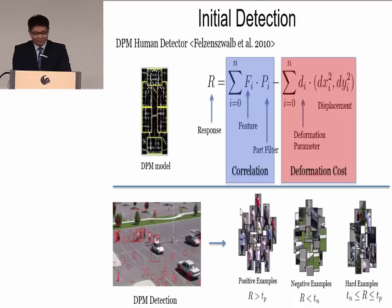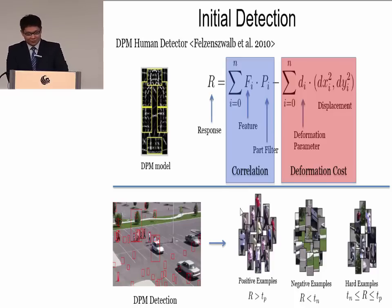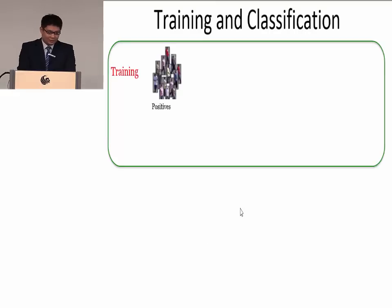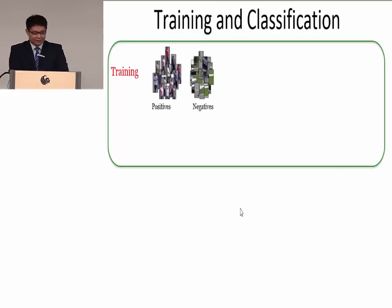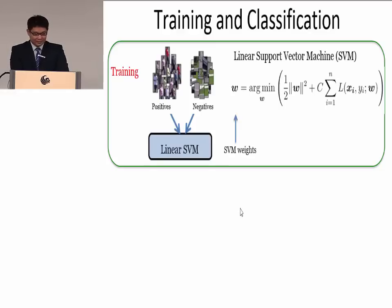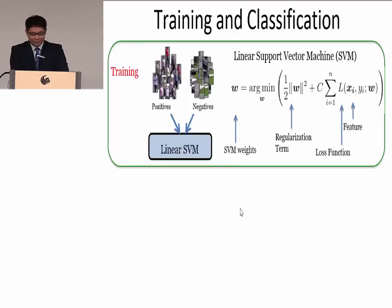Our method is to train a new linear SVM classifier and use it to label hard examples. Given the positives and negatives, we train a linear SVM classifier — the linear support vector machine. We get SVM weights by minimizing a function. The first term is the regularization term. The second term is the loss function of the feature X and label Y.